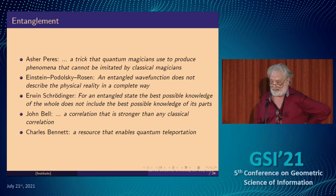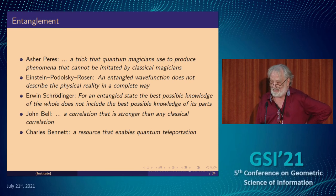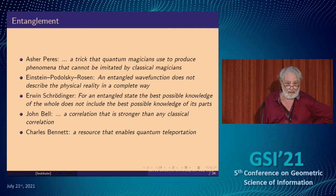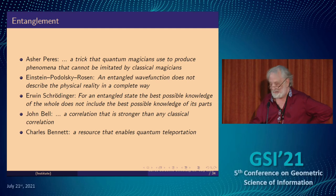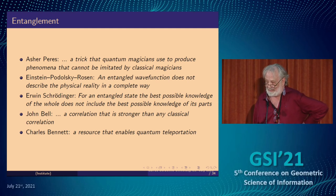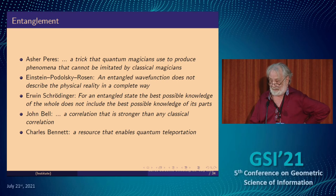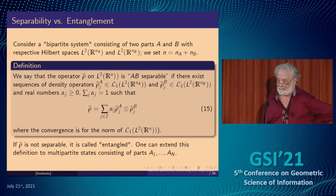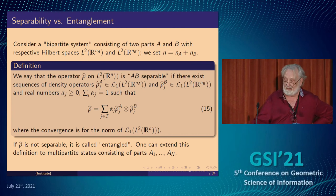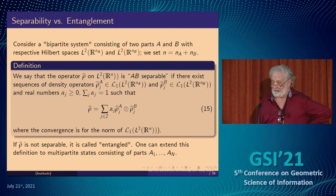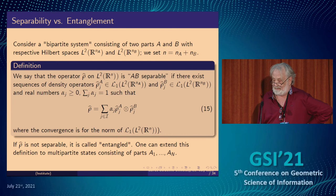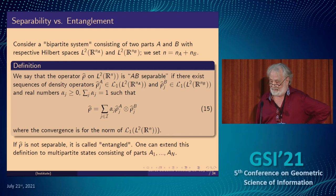Entanglement — one quote I like: entanglement is a trick quantum magicians use to produce phenomena that cannot be imitated by classical magicism. Definition of separability versus entanglement: a state is separable if you can write ρ̂ as in formula (15). If it's not separable, it's called entangled. There is one known necessary criterion for separability called the PPT criterion — positive partial transpose — which says that if you transpose one of the states, you still obtain a density operator.